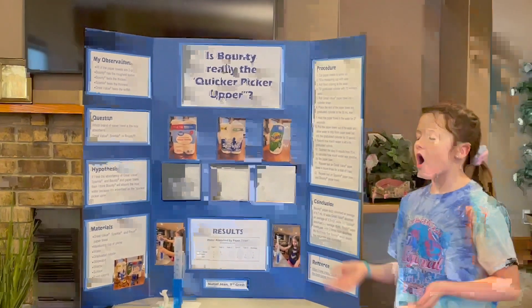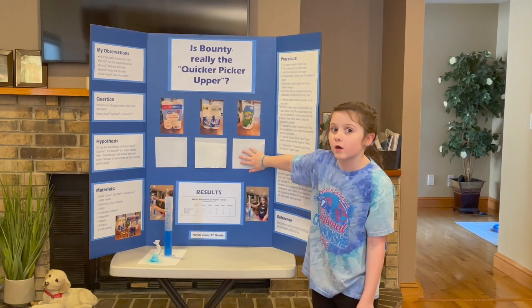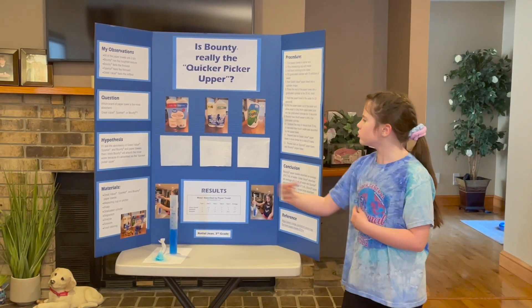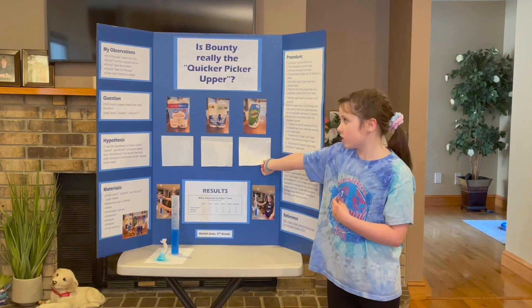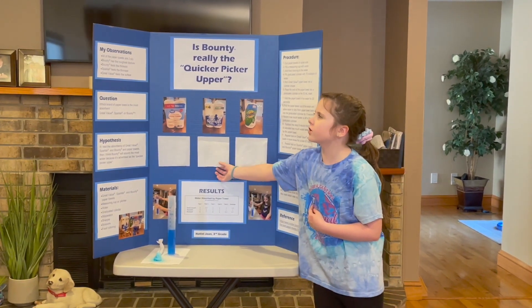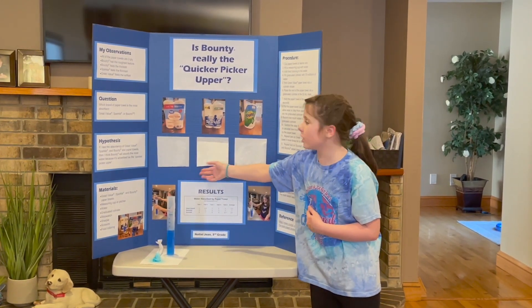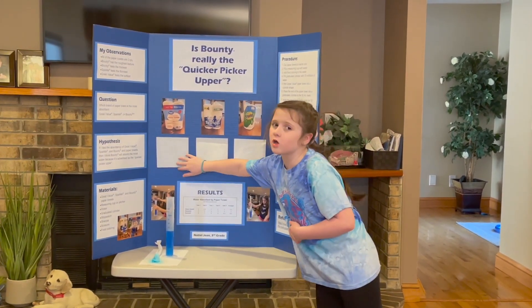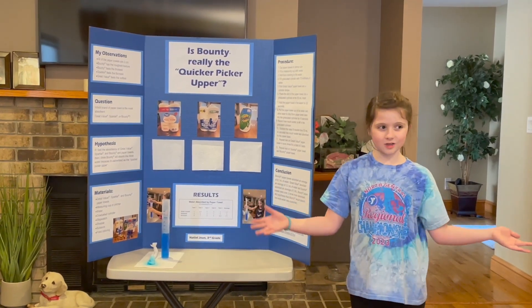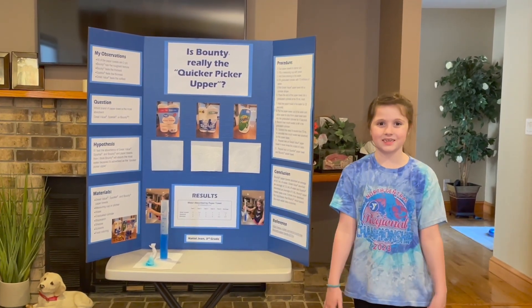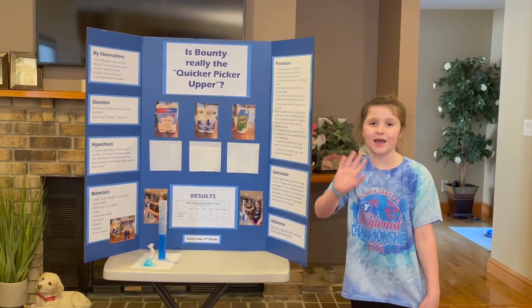Now let's go to some observations. All of the paper towels are 2-ply. Bounty has the roughest texture and also feels the thickest. Sparkle feels the thinnest, and Great Value is the softest. This concludes my presentation. Bye! Have a great day!